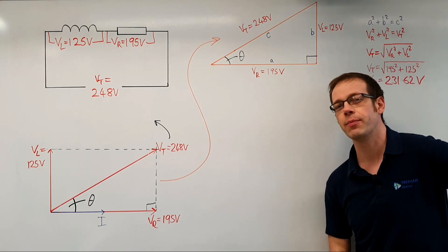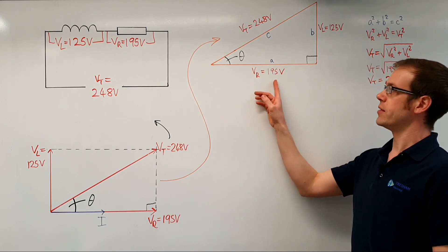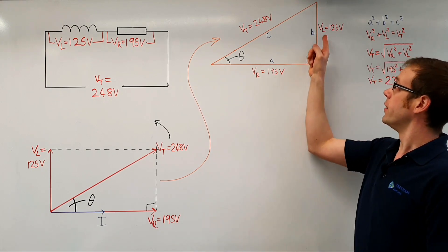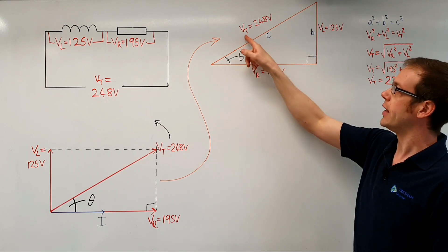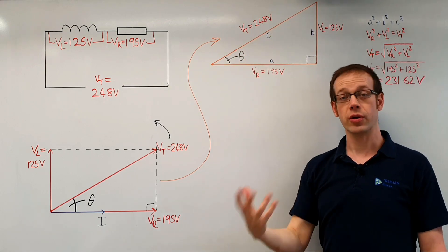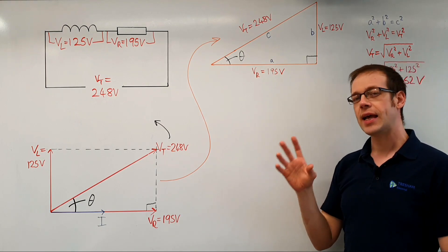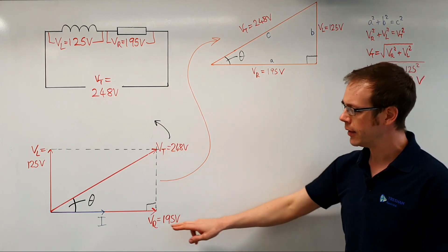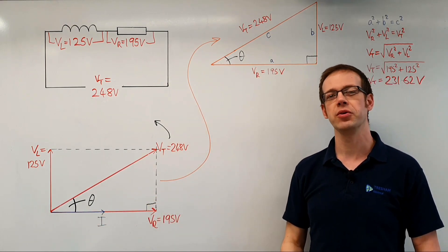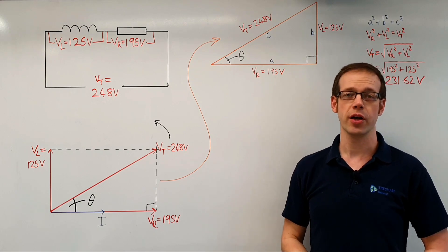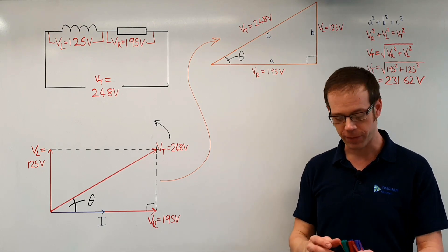Each side of this triangle represents a different voltage within our fluorescent light circuit. This side represents the voltage across the resistive part of the load, this side represents the voltage across the inductive part of the load, and this side represents the total voltage being applied to the circuit. Now, what if we take a voltage and divide it by the constant current flowing through the circuit? Hopefully your mind is busy working through Ohm's law.